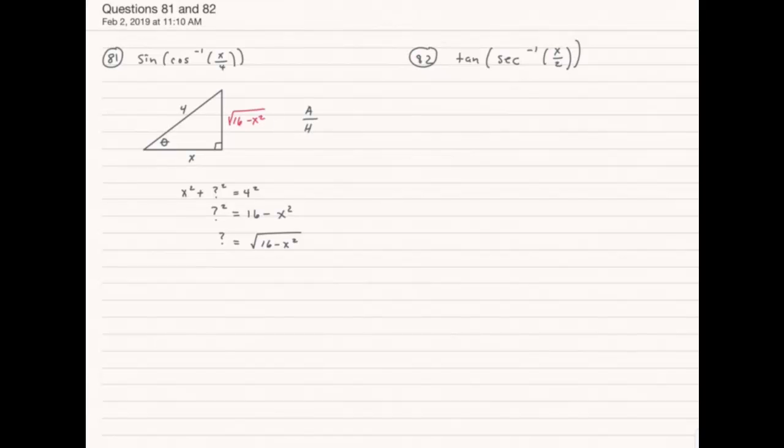So that means that missing side is simply the square root of 16 minus x squared. So the outside of this, the sine of that angle, well that's going to be the opposite over hypotenuse, which means all I have to do is read straight off of my triangle. The answer is going to be square root of 16 minus x squared, divided by 4. And that is all there is to that.